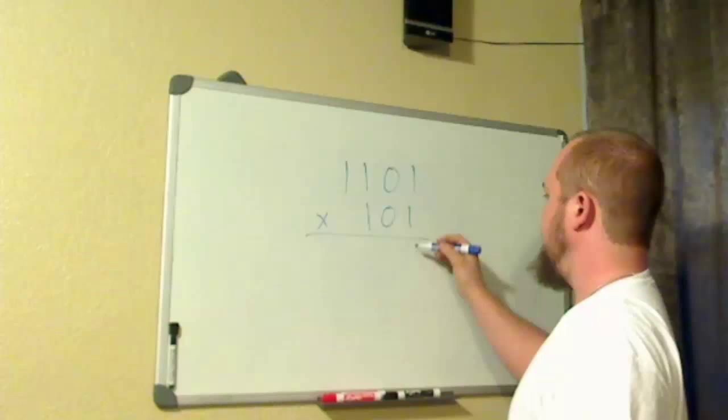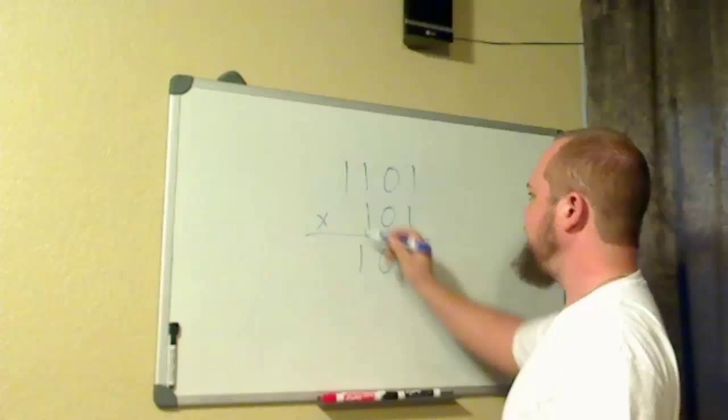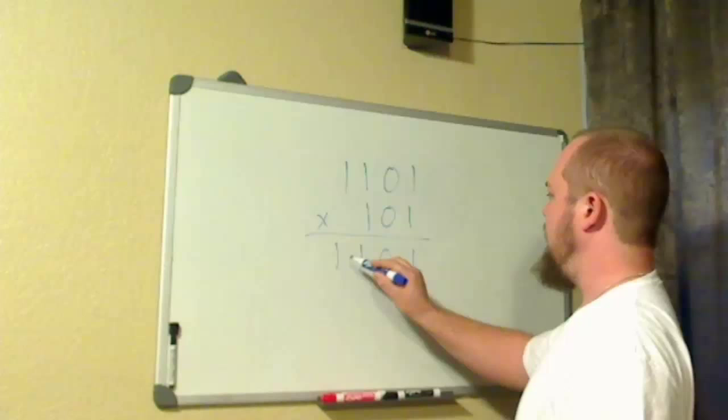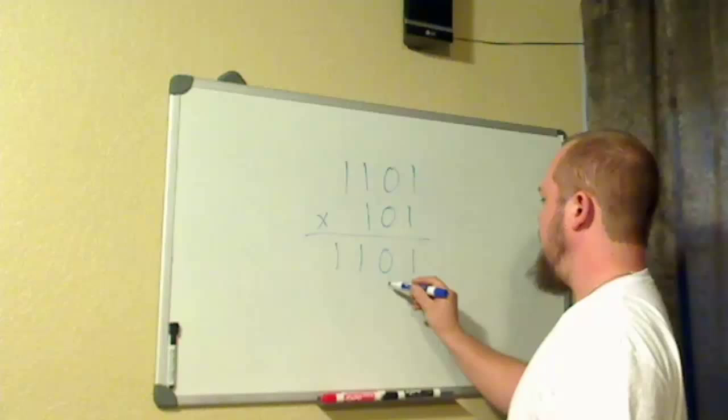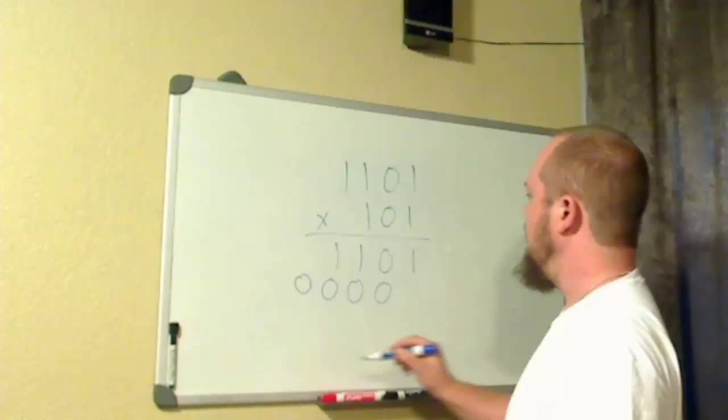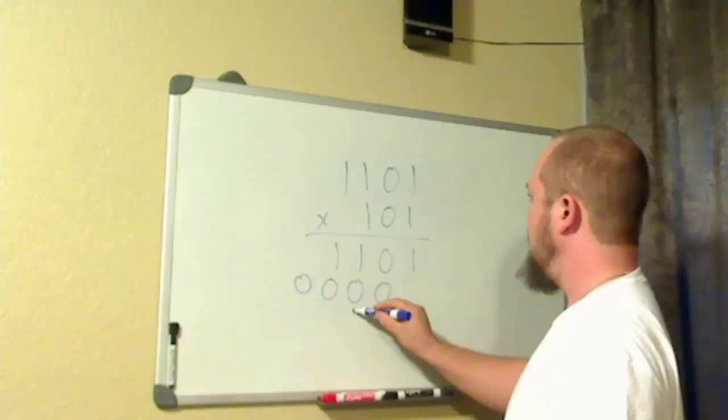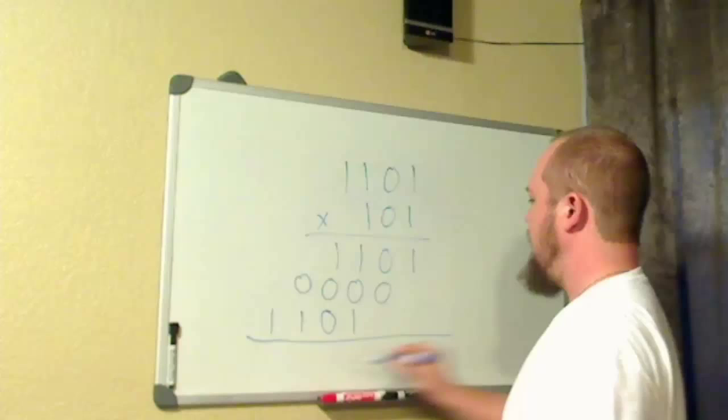1 times 1 is 1. 0 times 1 is 0. 1 times 1 is 1. 1 times 1 is 1. As you can see, 1101 and 1101. Now, let's multiply this by a 0. Normally, I wouldn't have to write this down, but I will for you. There you are. And 1101 times 1 is going to be 1, 0, 1, and 1. Now, we come down and we add this together.